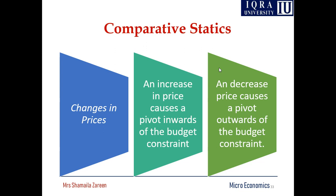In other words, if the price of clothes has changed, it does not mean the price of food items has also changed — the prices of food are the same but prices of clothes have been changed. The person's salary is the same, but the price of clothes has changed and the price of food is the same. An increase in price causes an inward shift of the budget constraint, and a decrease in price causes a pivot outward of the budget constraint.